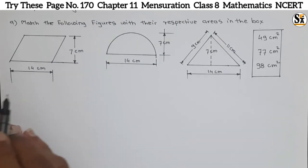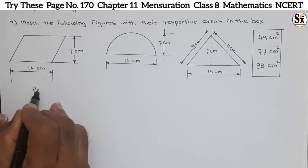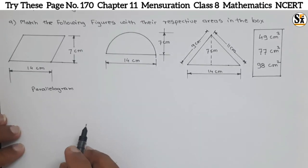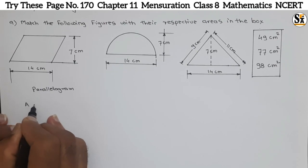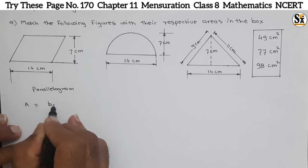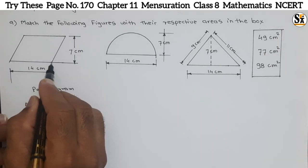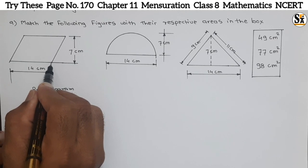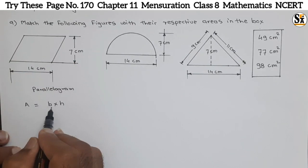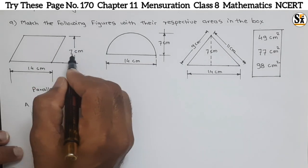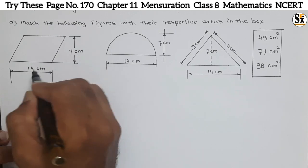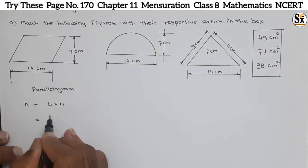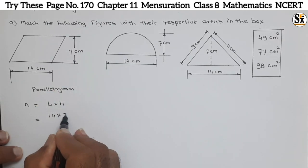First, let's see which figures are given. The first figure is a parallelogram. The formula for the area of a parallelogram is A = B × H, where B is the base and H is the height. In a parallelogram, two opposite sides are parallel, and the perpendicular distance between those two parallel sides is the height H. Here, B is 14 centimeters and height is 7 centimeters.